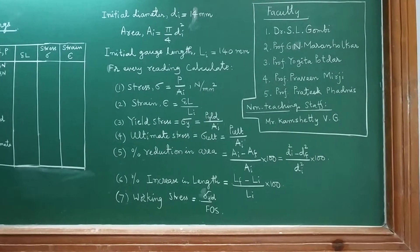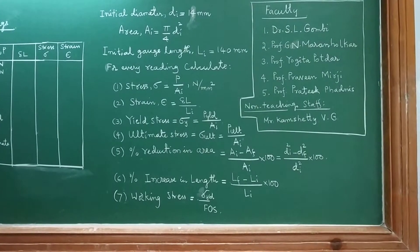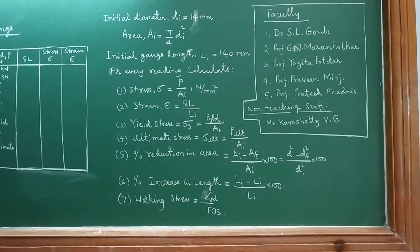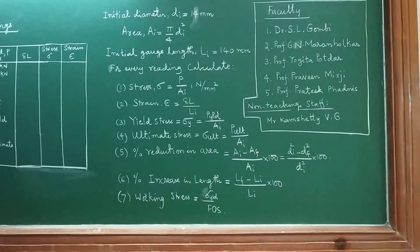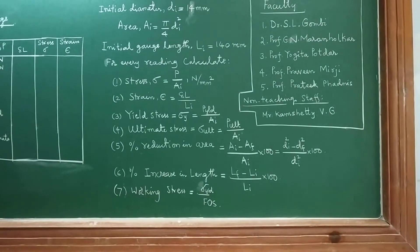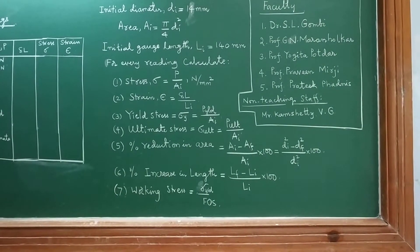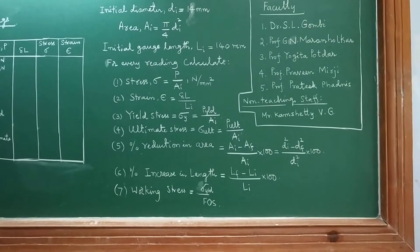Percentage reduction in area equals Ai minus Af upon Ai into 100. But since area is π/4 × D², you can convert directly: Di² minus Df² upon Di² into 100.